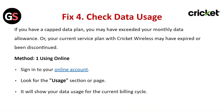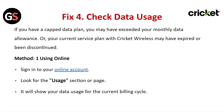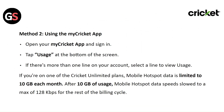Fix 4: Check Data Usage. If you have a capped data plan, you may have exceeded your monthly data allowance, or your current service plan with Cricket Wireless may have expired or been discontinued. Method 1 — Using Online: Sign in to your online account, look for the Usage section or page, and it will show your data usage for the current billing cycle.